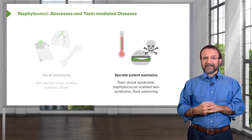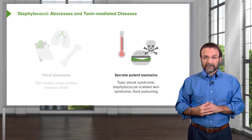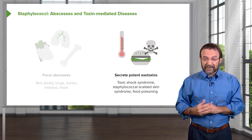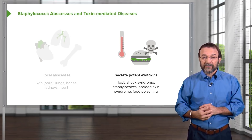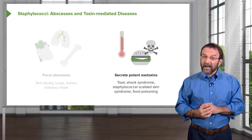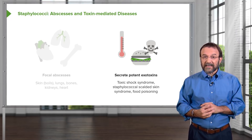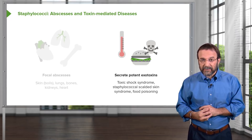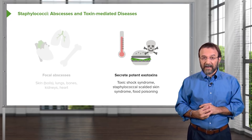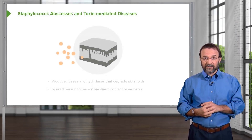A general feature of Staphylococci is that they secrete potent exotoxins — proteins produced and elaborated from the bacteria that have effects on the host. In the case of Staphylococci, these include the toxic shock syndrome toxin, Staphylococcal scalded skin syndrome, and food poisoning. These are all a consequence of toxin production and their effects.